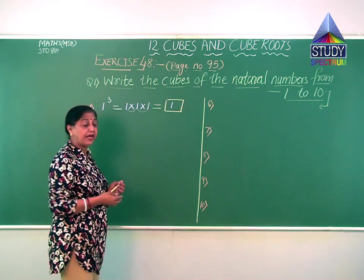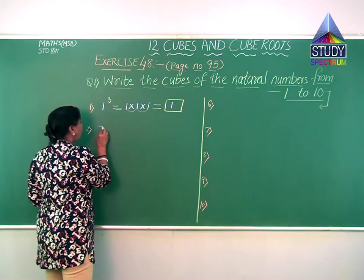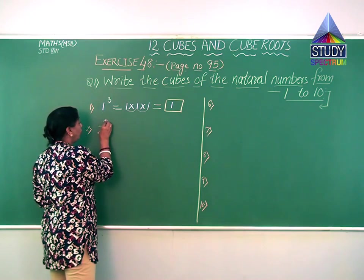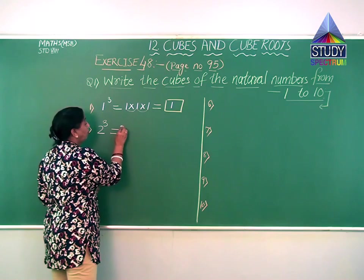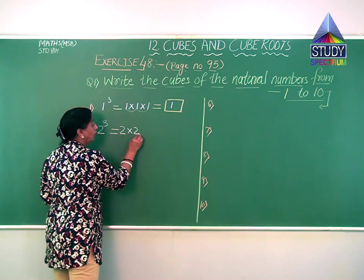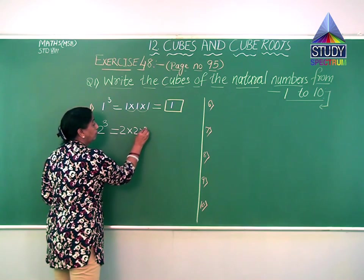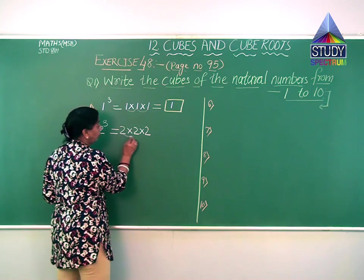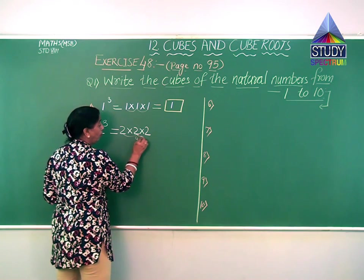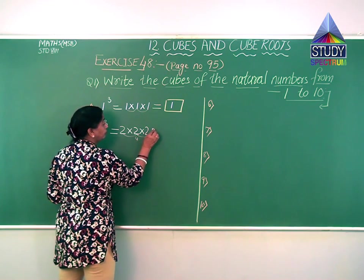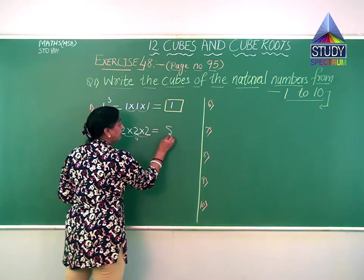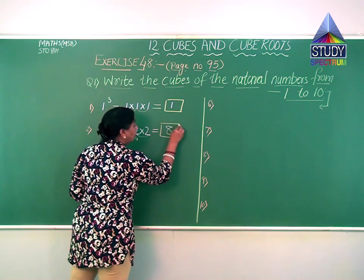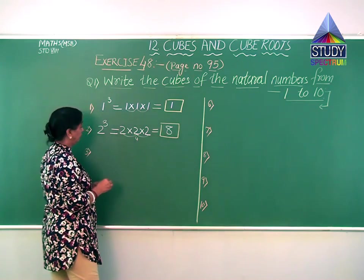The next natural number is 2. To find the cube, you write 2 cube, that is 2 into 2 into 2. Now find the product: 2 into 2 gives me 4, 4 into 2 gives me 8. So the cube of 2 is 8.